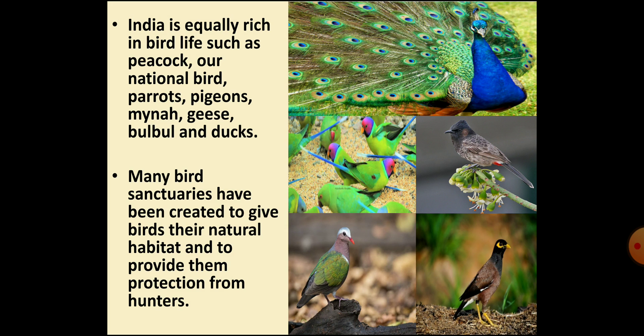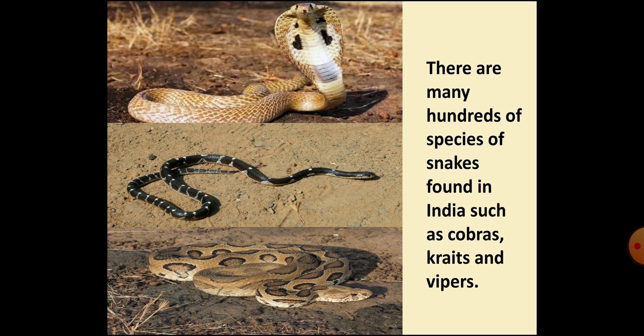The government has set up many bird sanctuaries to provide birds their natural habitat and protection from hunters. Among them, Bharatpur Bird Sanctuary, now known as Keoladeo National Park, is considered the largest in Asia. Several varieties of snakes are also found in India, such as cobras, kraits and vipers.